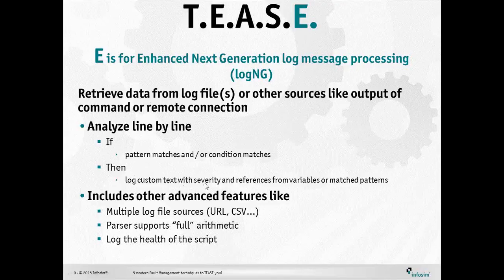We can put custom text into the alarm, enrich it, change the severity, and pull in additional information from variables or other match patterns to create an alarm that's useful for the NOC person who needs to identify and investigate the situation. Our parser supports full arithmetic, meaning we can do lots of things with these logs — we can even log the health of our own scripts. This LogNG next-generation capability allows you to get deep into devices or systems that have critical fault information buried in a log file or CSV file, extract the important fault information, enhance and enrich it, and pass it out to StableNet and ultimately to the people whose job it is to handle those things.